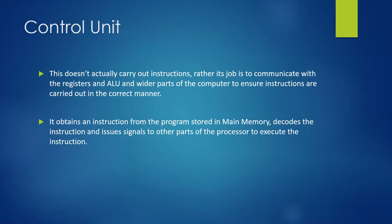Moving on, we have the control unit. The control unit doesn't actually carry out instructions. Its job is to communicate with the registers and the ALU and the wider parts of the computer system to ensure that instructions are carried out in the correct manner. So it obtains an instruction from the program which is stored in main memory, which we'll look at in the next video, decodes that instruction, and then it issues out signals to other parts of the processor to get that instruction executed. So it's very much, as the name says, a control unit. It coordinates the execution of program instructions.